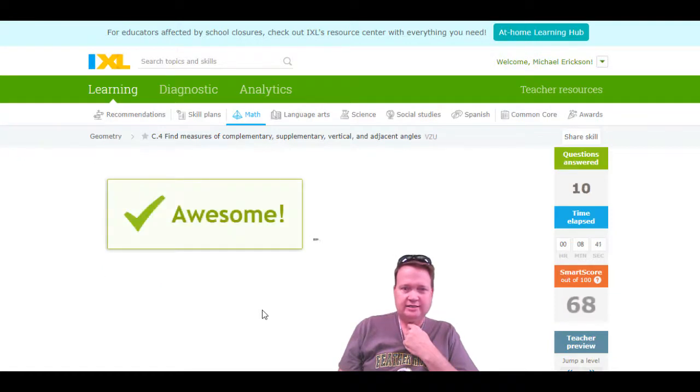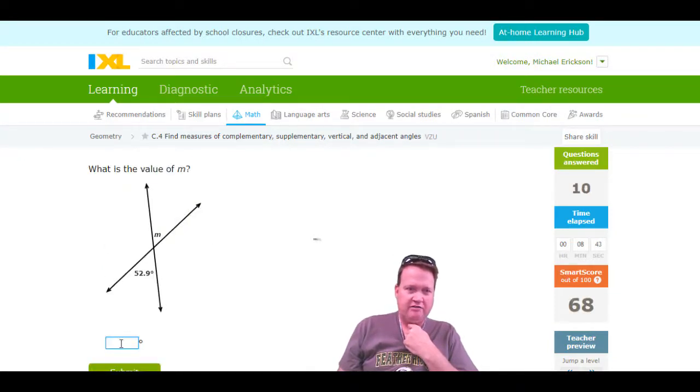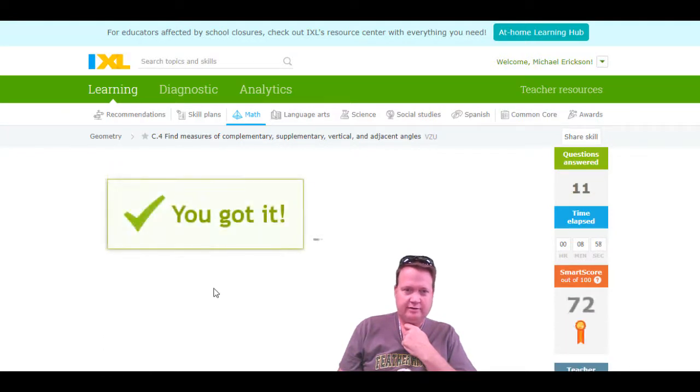Where are we at? We're at 68. Value of M? Well, that's a vertical angle. It's going to be vertical to 52.9, so it's equal to 52.9. I don't think the problems are really going to get a whole lot harder. It's going to take my answer there. Clicking submit. There we go.